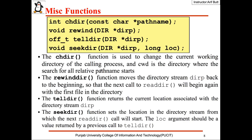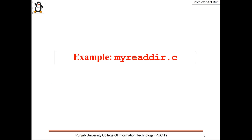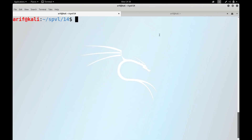Some other basic functions: chdir changes the current directory; rewinddir rewinds the directory stream; telldir and seekdir are used to change the current location associated with the directory stream. Let me move on to the terminal and see an example to understand these calls.